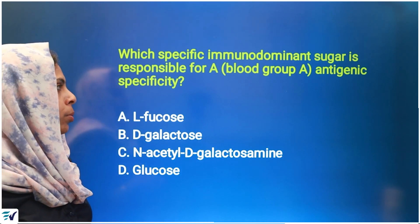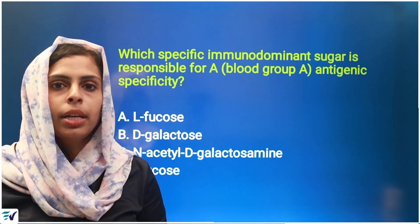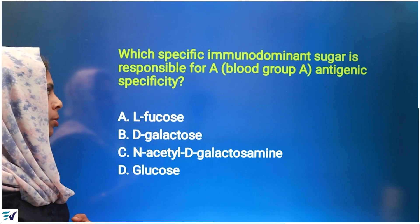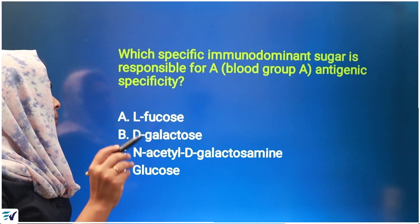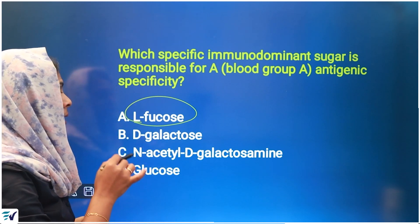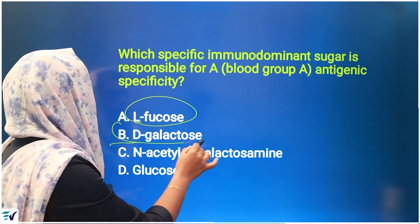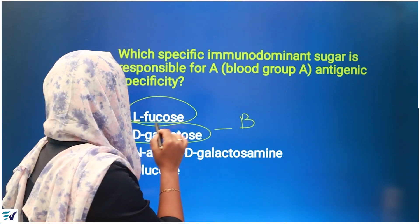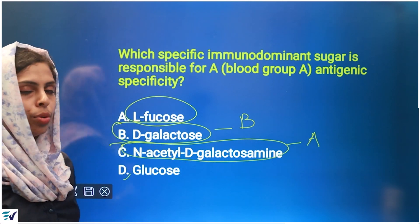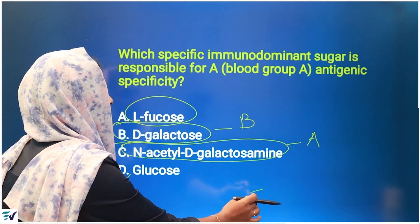Which specific immuno-dominant sugar is responsible for A-antigenic specificity? The antigen is a carbohydrate, especially in the ABO blood group. L-fucose is the basic structure; L-fucose alpha-1,2-galactose gives H-antigen. H-antigen plus D-galactose gives B-antigen. H-antigen plus N-acetyl-D-galactosamine gives A-antigen. Glucose is not present in this structure. So the answer is N-acetyl-D-galactosamine.